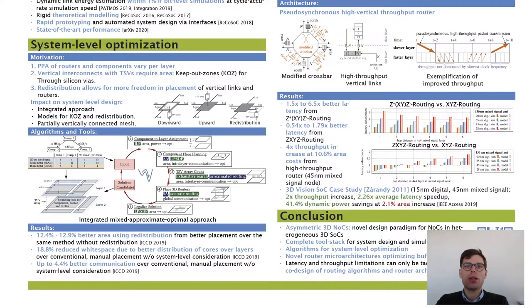By this co-design of router architecture and routing algorithms, we were able to achieve a throughput increase of 2x, an average latency speedup of 2.26x, 41% dynamic power savings at only 2.1% area costs.